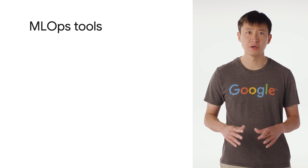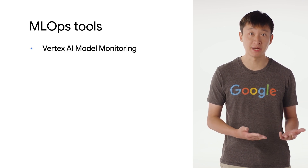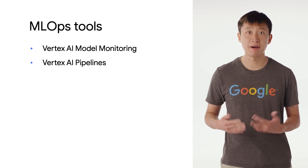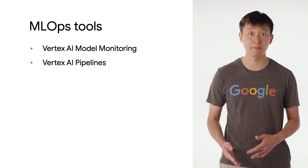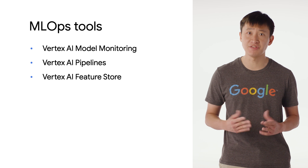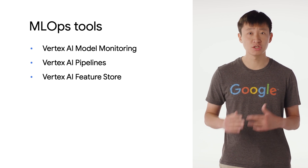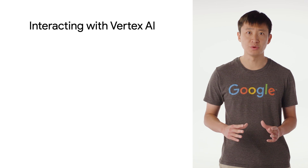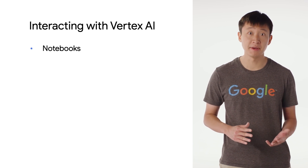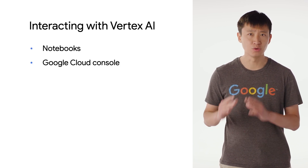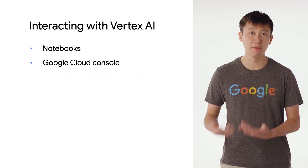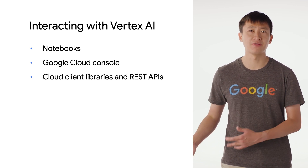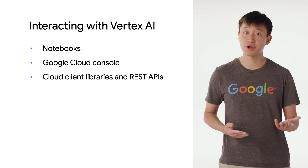These tools include Vertex AI Model Monitoring for monitoring the quality of your deployed models, Vertex AI Pipelines for orchestrating repeatable training and serving pipelines, and Vertex AI Feature Store for organizing, storing, and serving features. To interact with Vertex AI, you can use Notebooks prepackaged with JupyterLab and Deep Learning packages, the Google Cloud Console to manage your ML resources and get access to monitoring and logging, and the Cloud Client Libraries and REST APIs to call Vertex AI from your code.